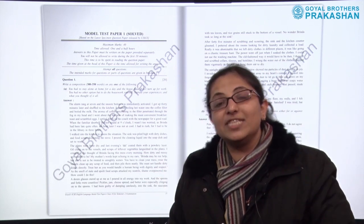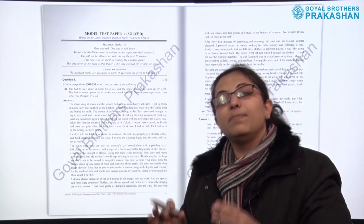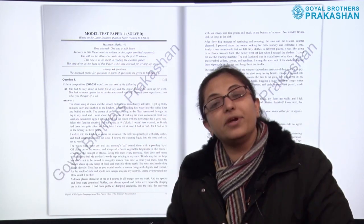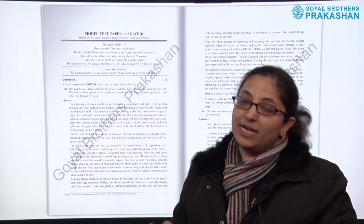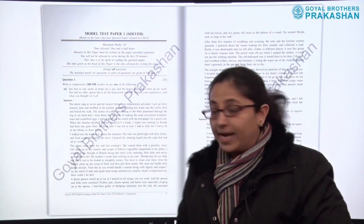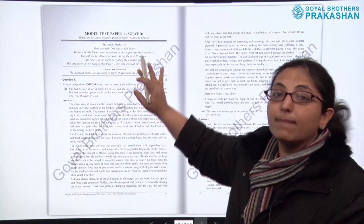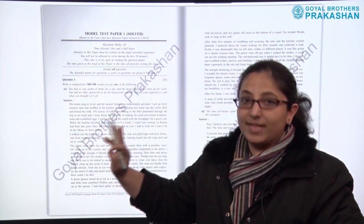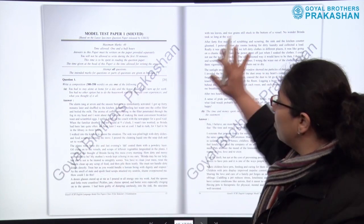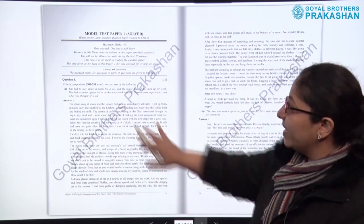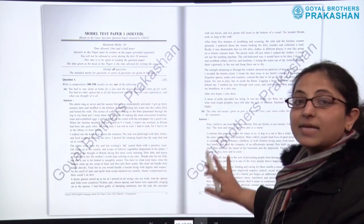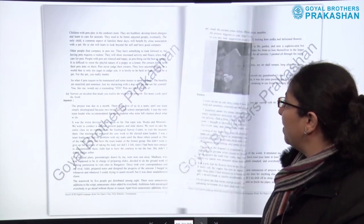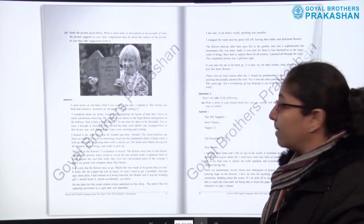After the specimen question paper in Section A, we come to Section B of the book — the model test papers, solved. As already mentioned, there are 10 model test papers which are solved. This is model test paper number one, strictly based on the pattern of the specimen question paper released by the council. All the answers are there with the questions.